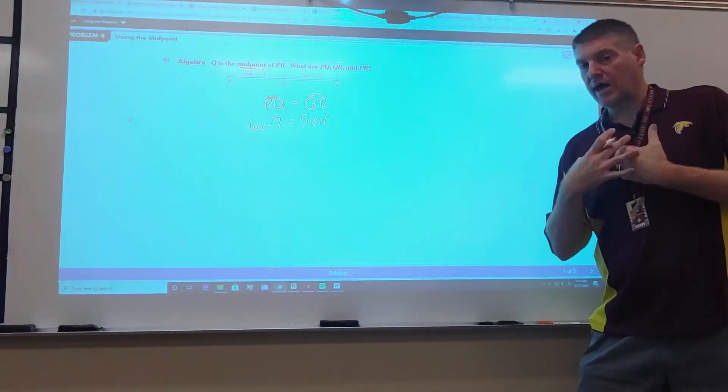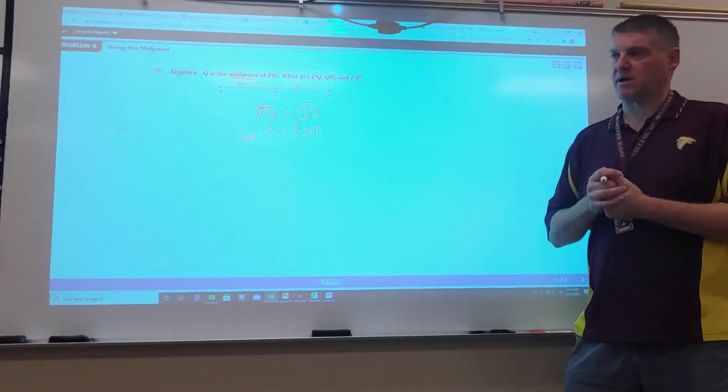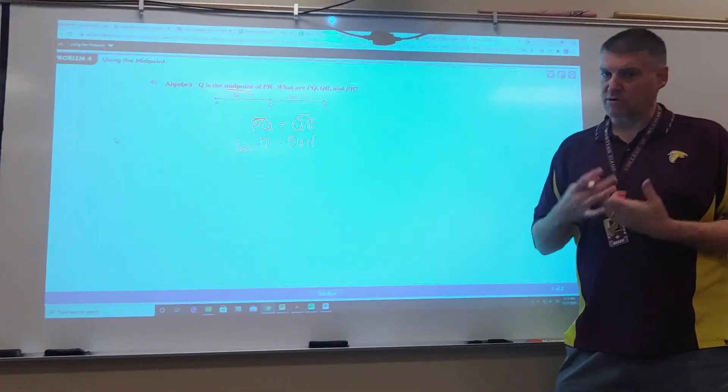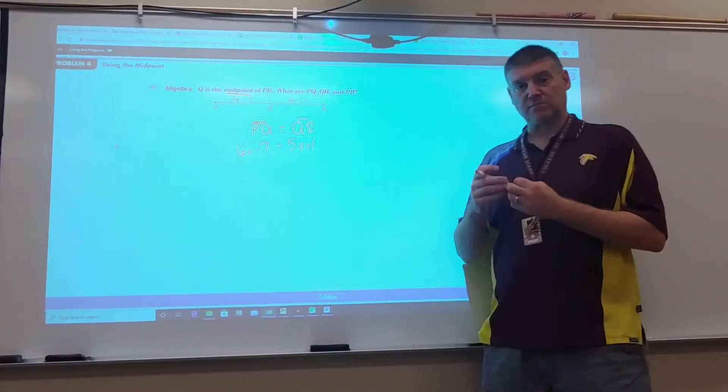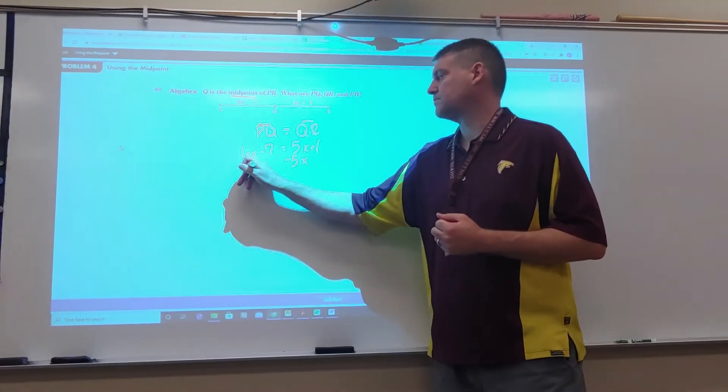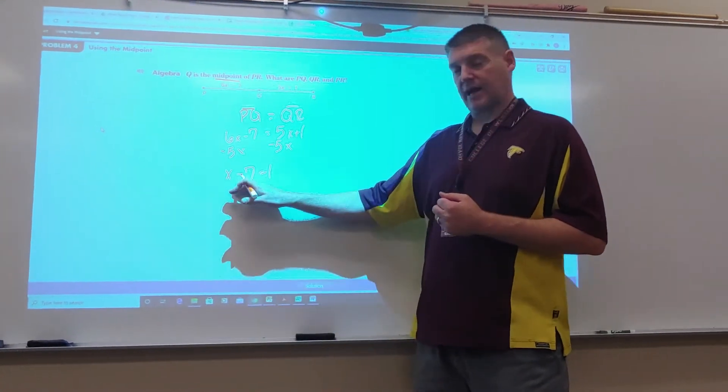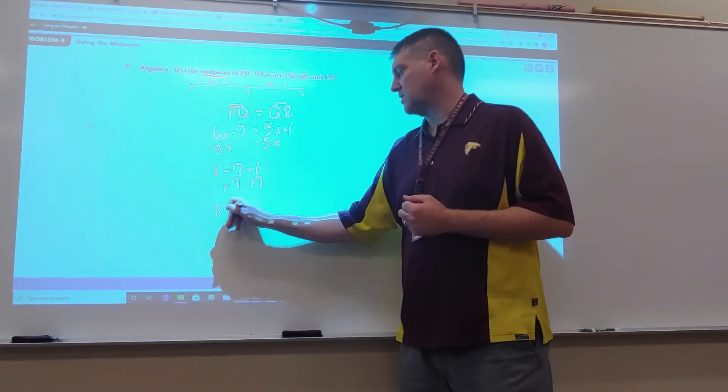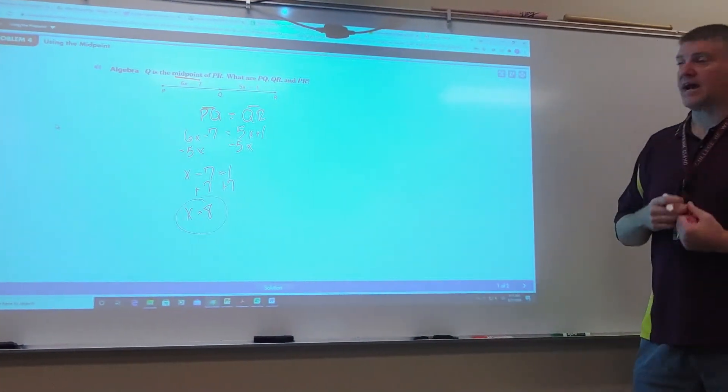I always start with moving my variables first if I have multiple variables. Does it really matter which one you move first? No, it does not. I always take the smaller coefficient on the variable and move it. So I'm going to subtract my 5X over. This gives me X minus 7 equals 1. Now I'm going to get rid of the 7, I'm going to add 7 to both sides. X equals 8. That gives me the value of X. Does that answer my question? No, because it asks for what is PQ, QR, and PR.